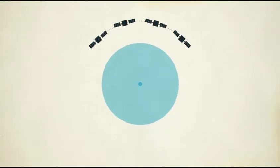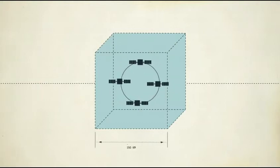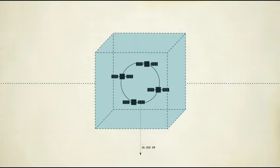The satellites we launch end up living in a box around 150 kilometers wide, 36,000 kilometers above the equator.